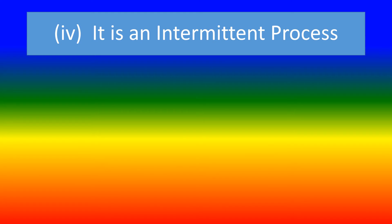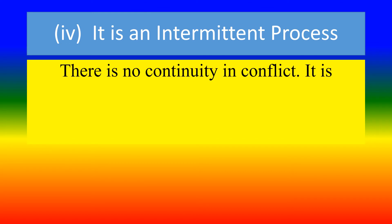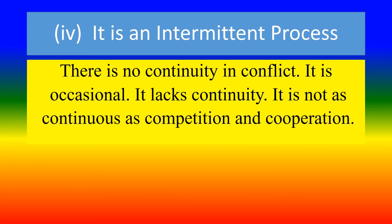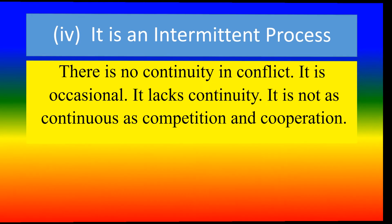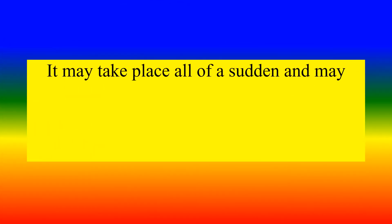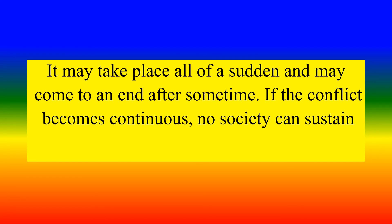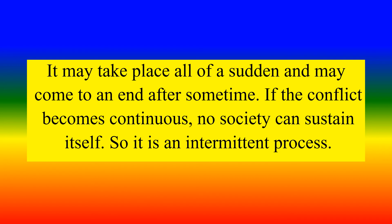Fourth, it is an intermittent process. There is no continuity in conflict. It is occasional and lacks continuity. It is not as continuous as competition and cooperation. It may take place all of a sudden and may come to an end after some time. If the conflict becomes continuous, no society can sustain itself. So it is an intermittent process.